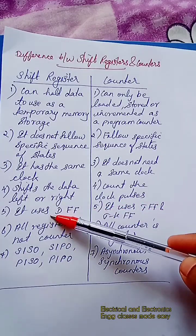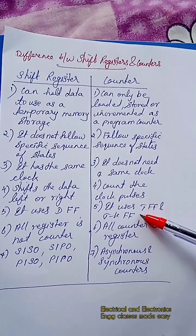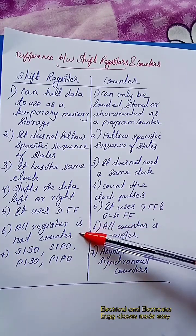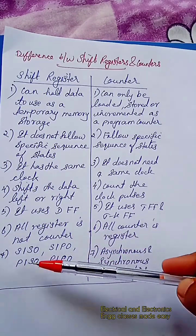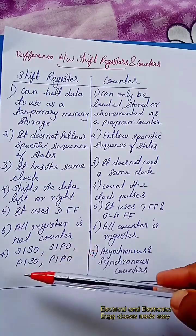Shift register uses D flip-flop, whereas a counter uses T flip-flop and JK flip-flop. All registers are not counters. All counters are registers.